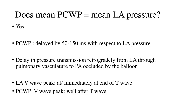An important question: does the mean wedge pressure we measure actually equate to mean LA pressure? The answer is yes, more often than not. However, the timing of the wedge pressure tracing is delayed by around 50 to 150 milliseconds with respect to the LA pressure. This happens because there is delay in pressure transmission retrogradely from the LA through the pulmonary vasculature to the pulmonary artery occluded by the Swan-Ganz balloon. The main waveform of both wedge and LA pressure tracing is the V wave, as it is greater than the A wave; also, in atrial fibrillation, the A wave would be altogether absent.